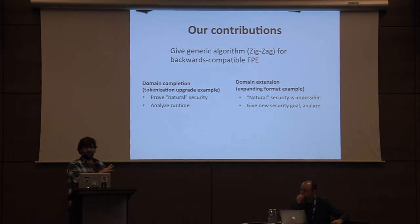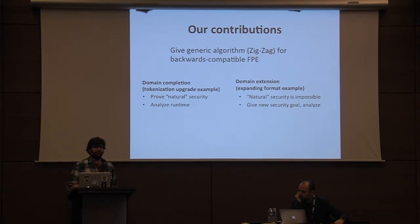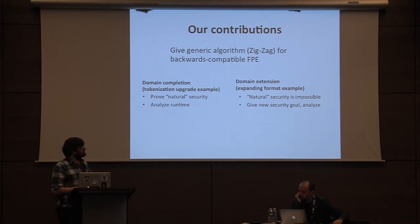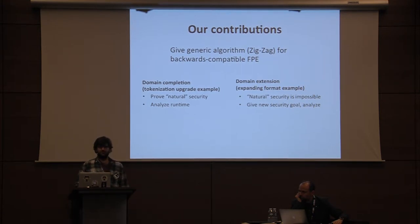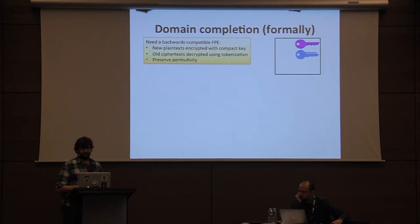The tokenization upgrade example is referred to as domain completion in the rest of the talk. We proved that the zigzag meets the natural security notion for this setting. We also analyzed the runtime of the zigzag and proved it's fast with all but negligible probability. For domain extension — the format expansion example — we prove that the strongest natural security is actually impossible, and we give a new, slightly weaker security goal.